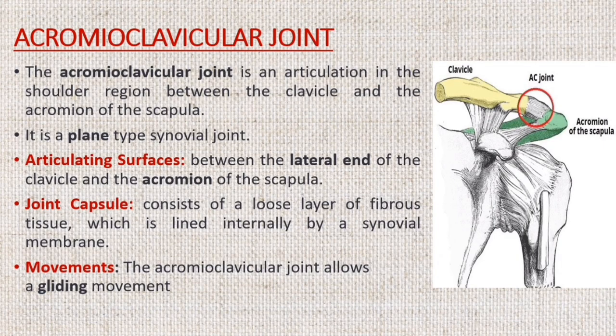The acromioclavicular joint is an articulation in the shoulder region between the clavicle and the acromion of the scapula. It is a plane-type synovial joint. The joint consists of an articulation between the lateral end of the clavicle and the acromion of the scapula. The joint capsule encloses the two articular surfaces and consists of a loose layer of fibrous tissue lined internally by a synovial membrane. The posterior aspect of the joint capsule is reinforced by fibers from the trapezius muscle.